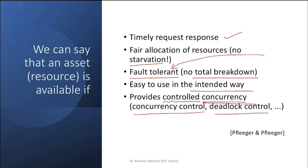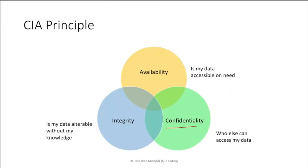Looking back at the CIA principles after discussion: confidentiality addresses who else can access my data. When you upload your card details to a banking website or share personal information anywhere online, you always think about who on the other side can see your information.